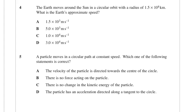The Earth moves around the Sun in a circular orbit with a radius of 1.5 times 10 to the 8 kilometers. What is the Earth's approximate speed?